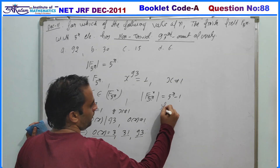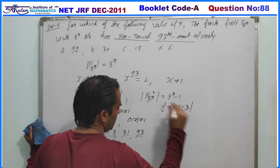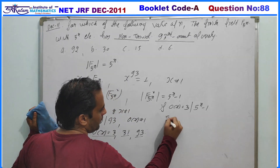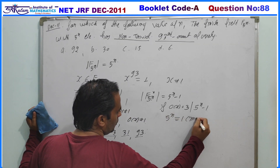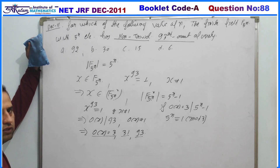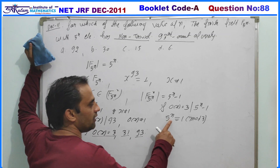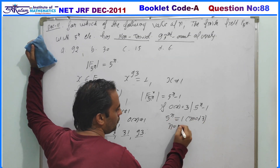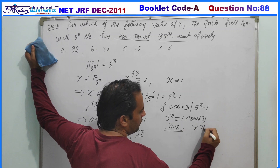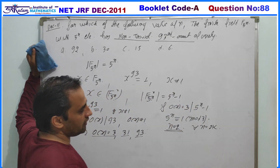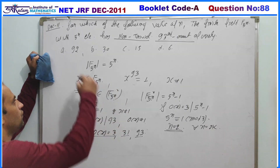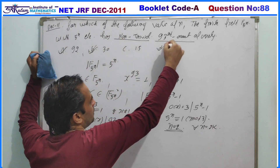If the order of x is 3, then by Lagrange's theorem the order of the element divides the order of the group, so 3 must divide 5^n - 1. This implies 5^n ≡ 1 (mod 3). For n = 2 this equation is satisfied, and hence for all n = 2k this equation also holds. So every value of n which is a multiple of 2 gives a non-trivial 93rd root of unity — meaning the first, second, and fourth options are true.